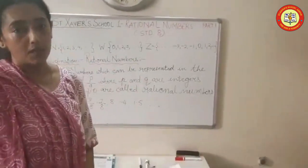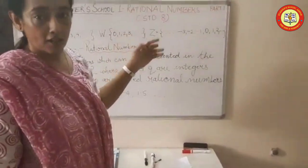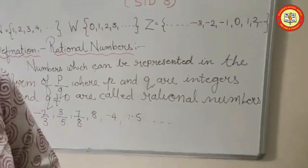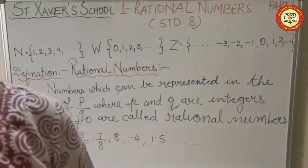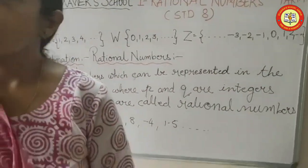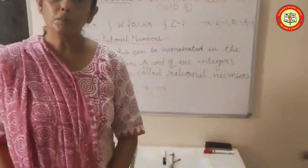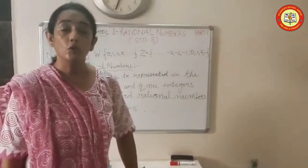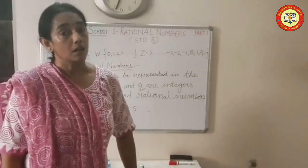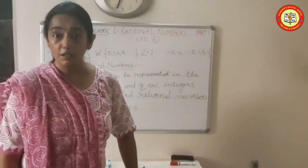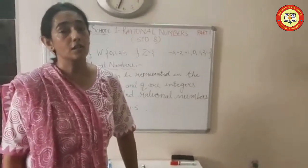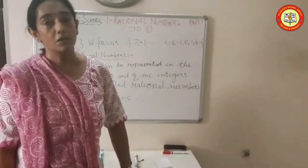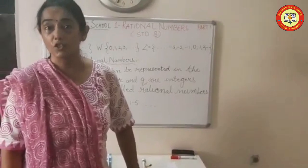In rational numbers, the topics we will cover are: introduction to rational numbers, properties of rational numbers — closure property, associative property, commutative property, distributive property — some special properties like role of 0, role of 1, additive inverse, multiplicative inverse, how to represent a rational number on the number line, and how to find rational numbers between two given rational numbers.